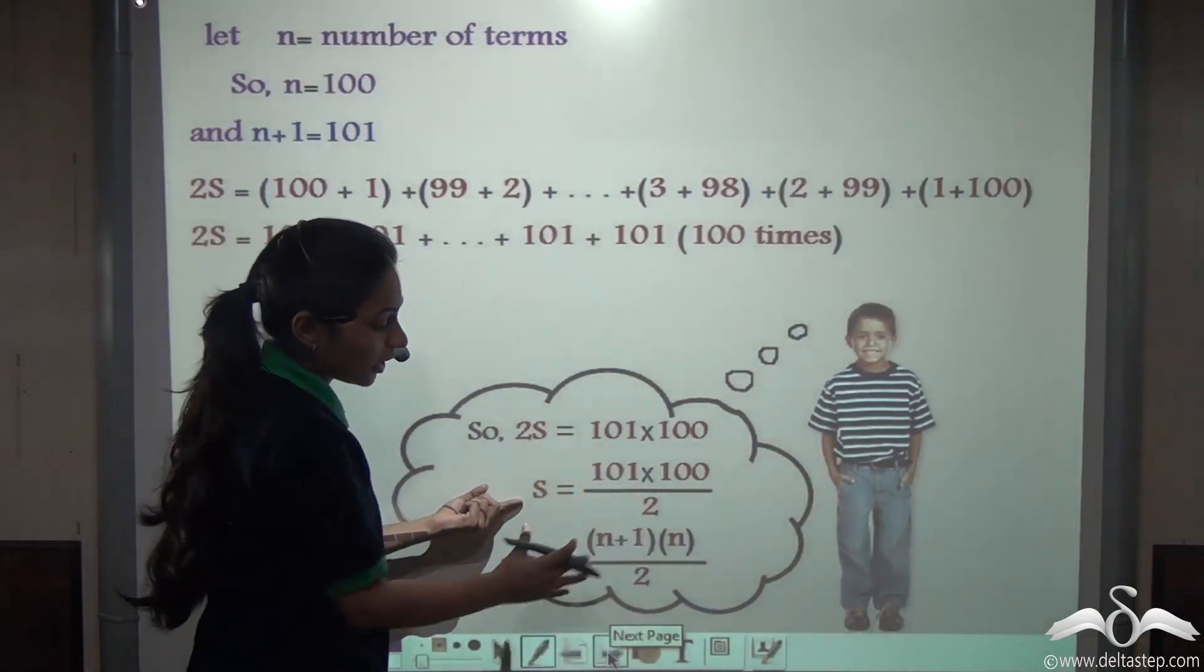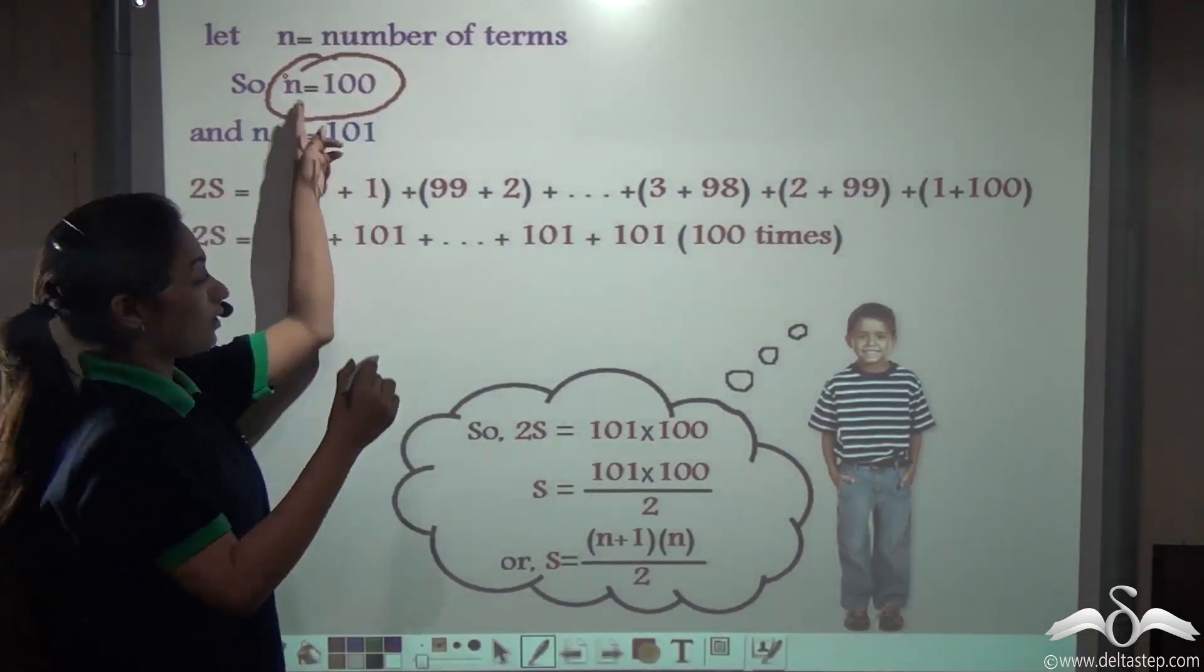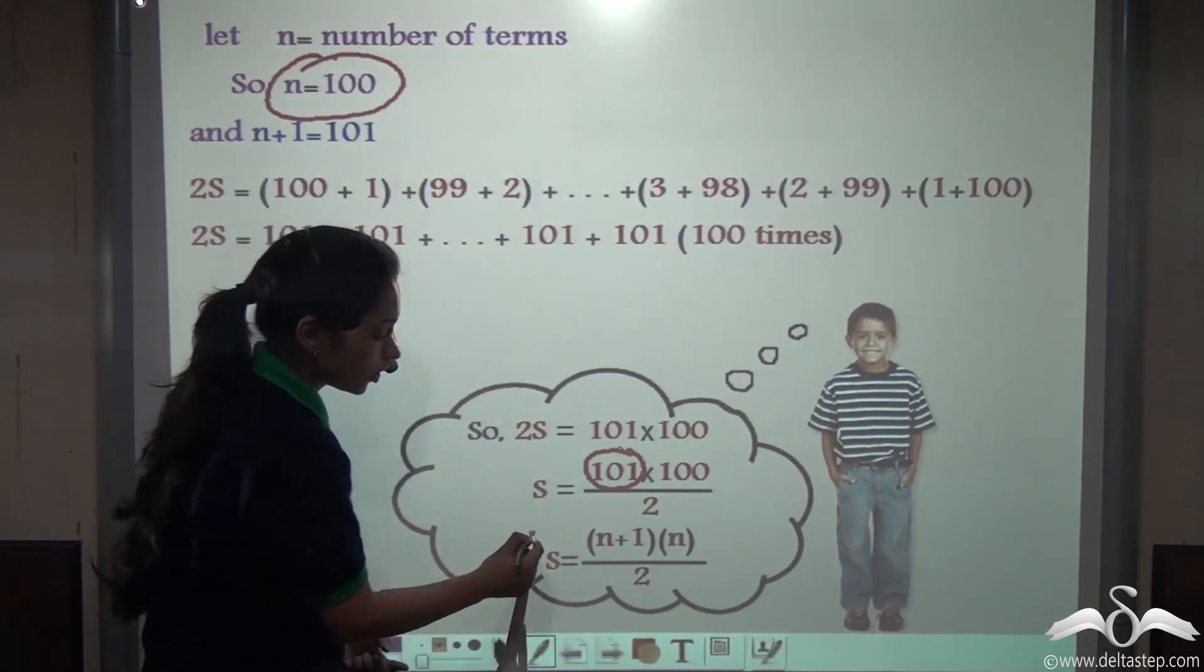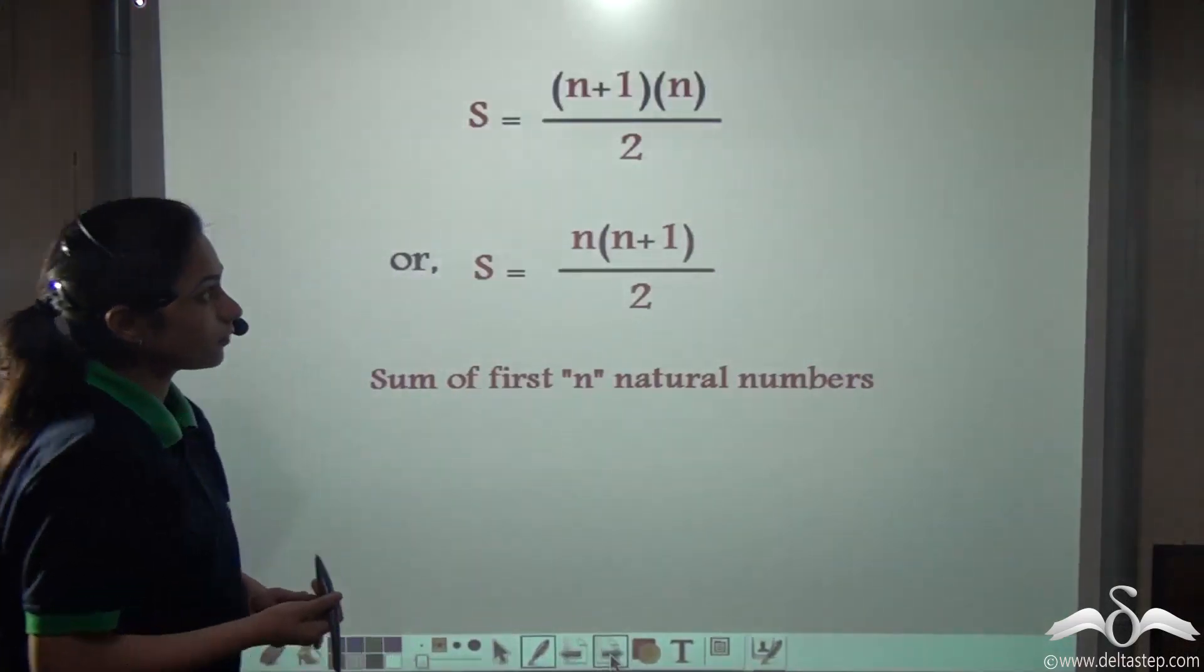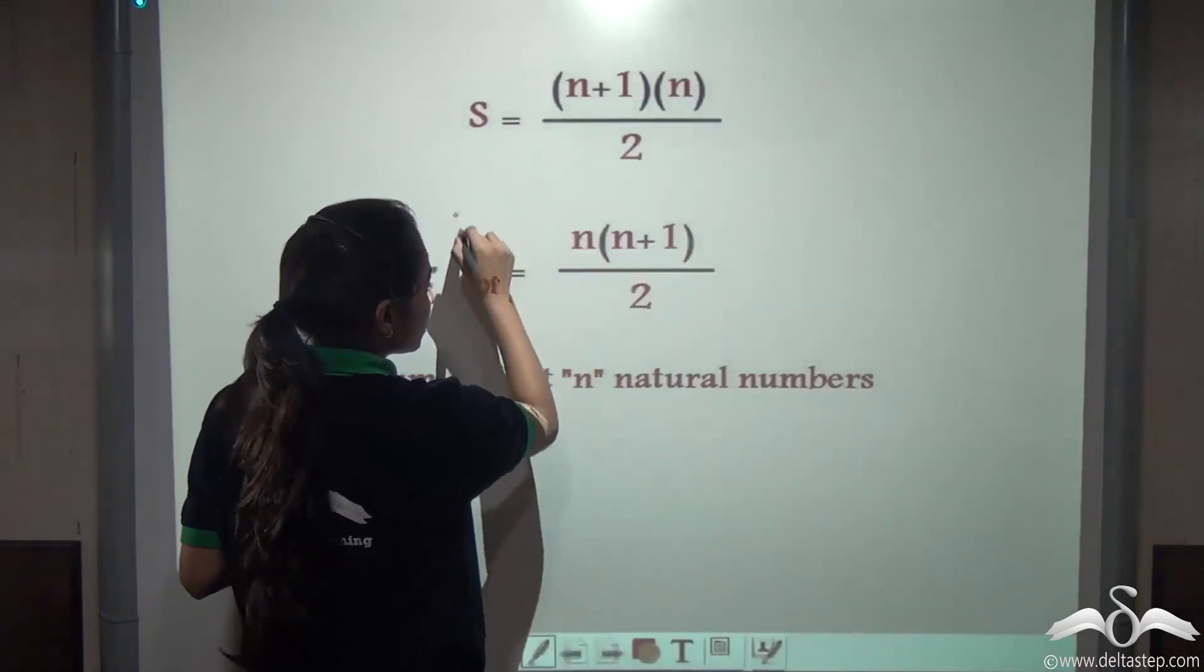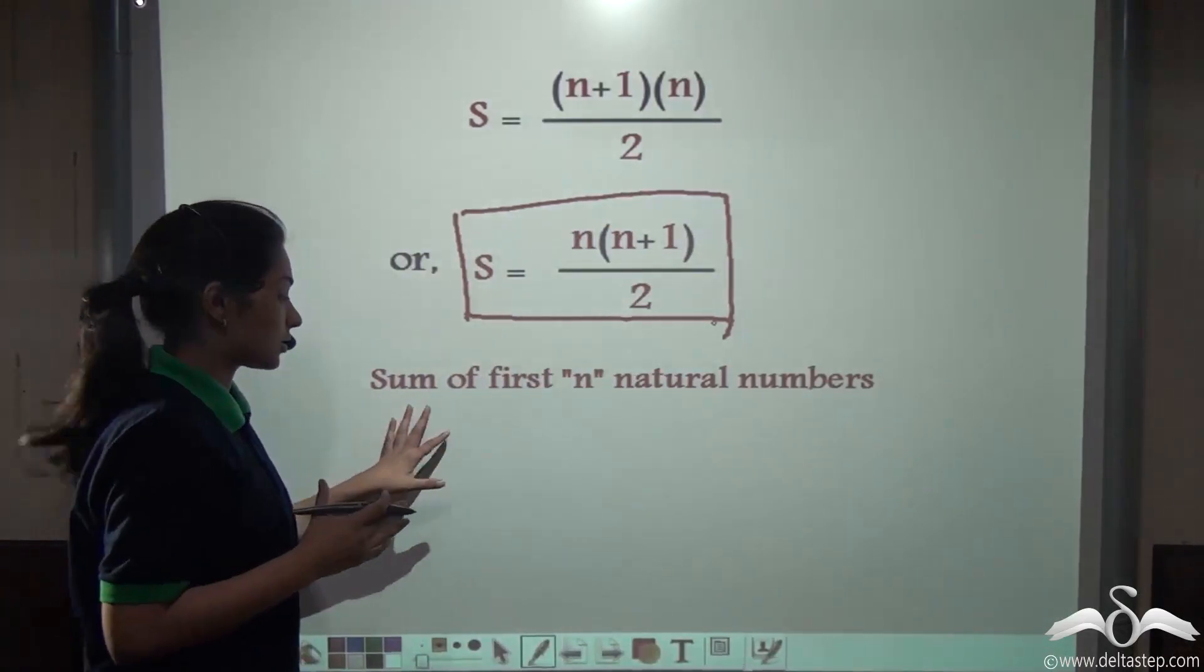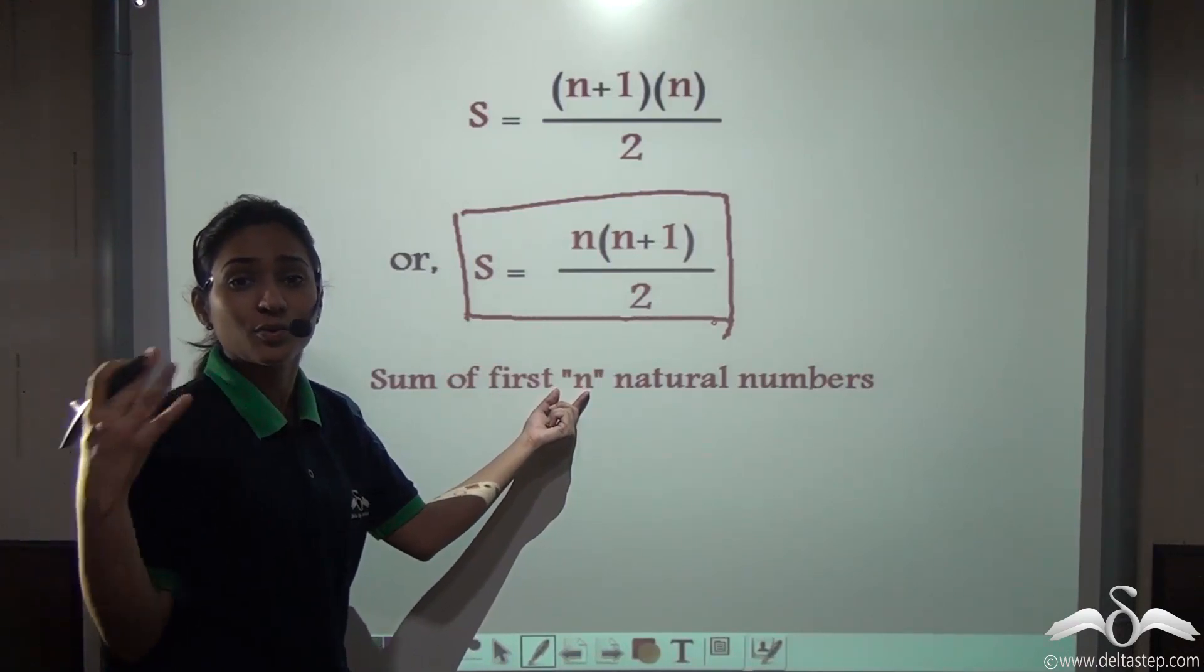If we derive this into a formula, the number of terms n was 100. So n into n plus 1, that is 101, divided by 2 gave us the sum. We can use this formula to find the sum of n numbers: n into n plus 1 by 2. This is the sum of n natural numbers. Instead of counting on your fingers, you can use this formula. Now this n can be anything: 9, 10, 50, 70, 100, 200, and so on.